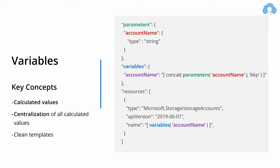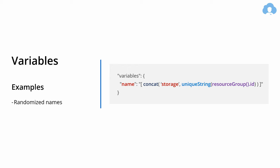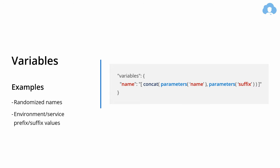This is a highly recommended approach for building pretty much any ARM template. The most common examples of using variables include randomizing names — creating a unique name for your resources whenever deploying from an ARM template. Another common example is adding a prefix or suffix to environment or service names, ensuring proper quality and naming convention for application resources across multiple environments.